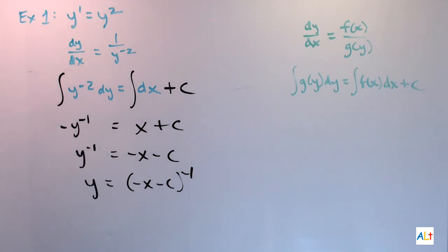That's a general solution. Any possible constant value you can think of, you can substitute into this, and this will be a valid solution. If you had an initial condition, then you would substitute that in for the x and y, and you would solve for c, and that would give you a particular solution.